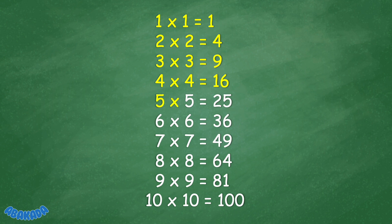5 times 5 equals 25. 6 times 6 equals 36. 7 times 7 equals 49. 8 times 8 equals 64.